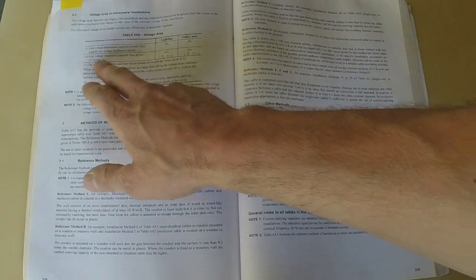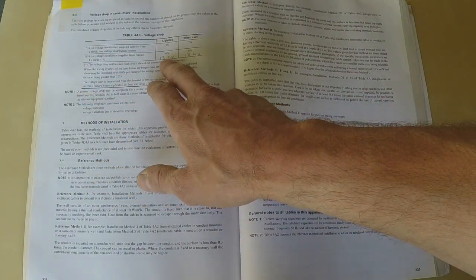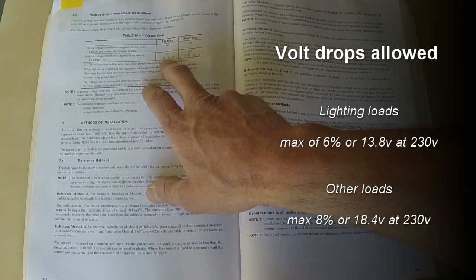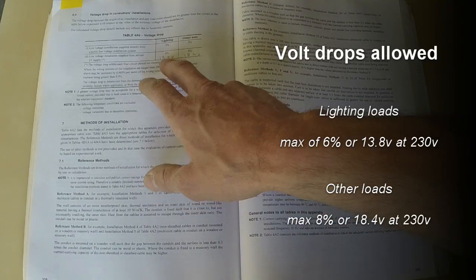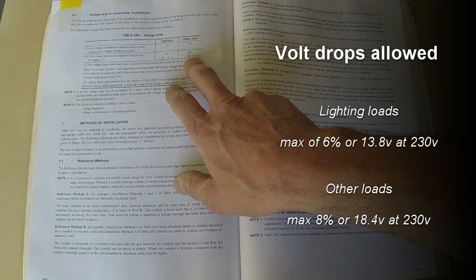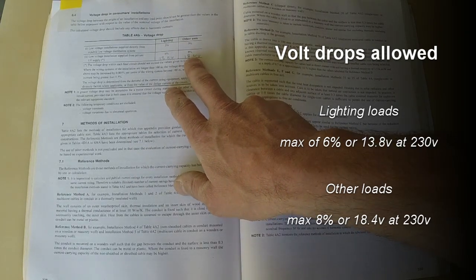For lighting that's 6%, which is 13.8 volts allowed at 230 volts, and 8% for all other uses, which is 18.4 volts.